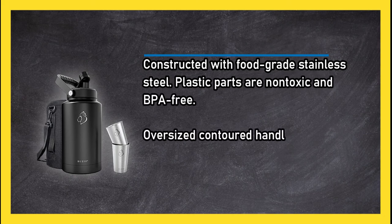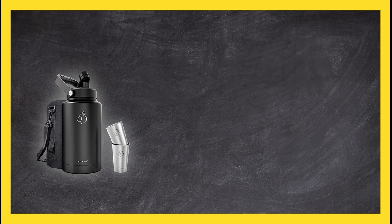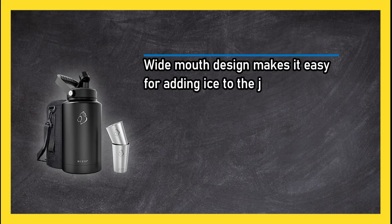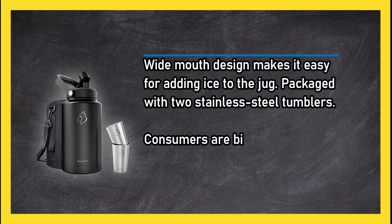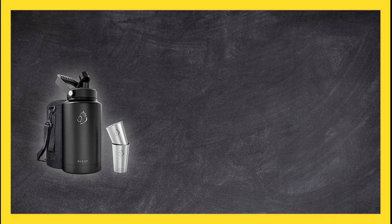Oversized contoured handle makes for easy carrying. Wide mouth design makes it easy for adding ice to the jug. Packaged with two stainless steel tumblers. Consumers are big fans of the sweat proof design of this double walled jug. Many feel the design would benefit from a second handle on the bottle.